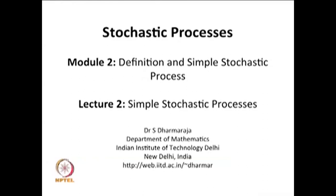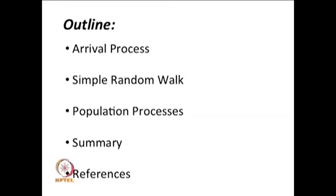This is Module 2: Definition and Simple Stochastic Process, and today is Lecture 2 on simple stochastic processes. In Lecture 1 we saw the definition of a stochastic process, the classification based on time space and parameter space, and a few simple stochastic process examples. In this lecture we will discuss some simple stochastic processes, starting with the discrete time arrival process — the Bernoulli process — and the continuous time arrival process — the Poisson process. Followed by that we will discuss the simple random walk, a simple population process arising in branching processes, and the Gaussian process.